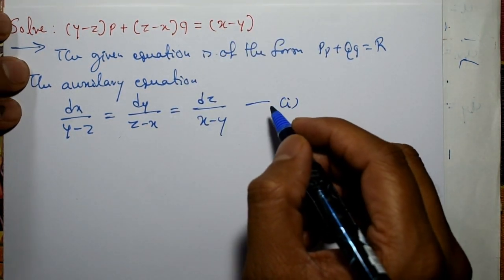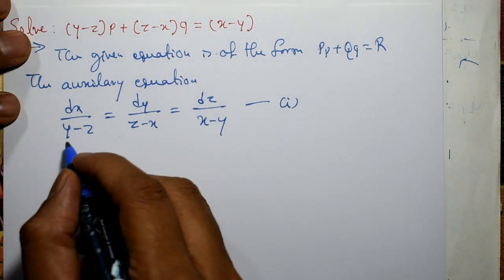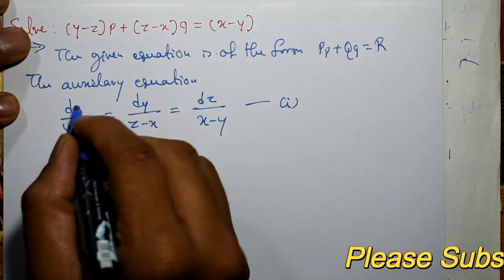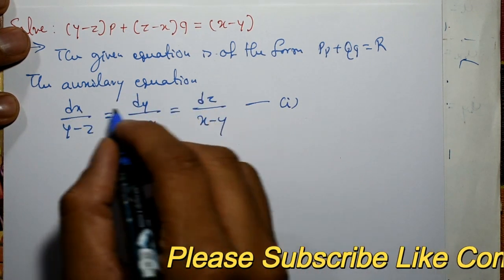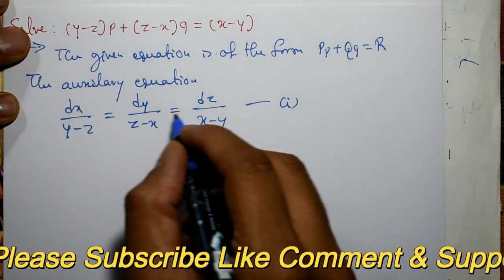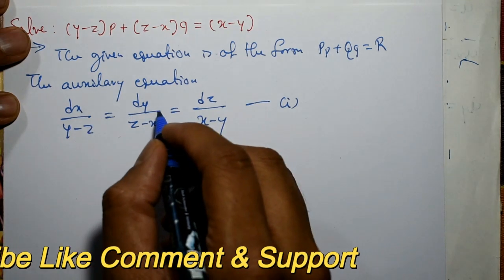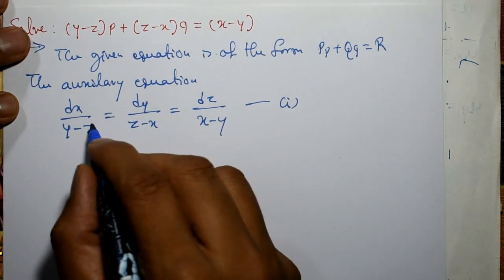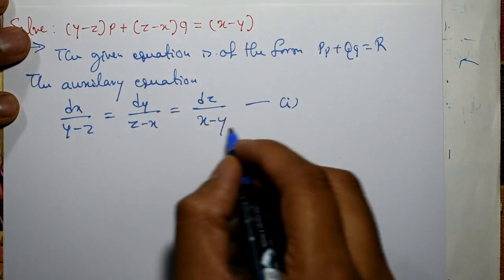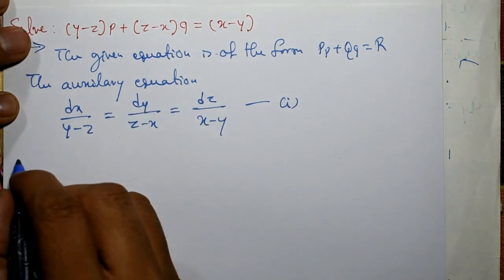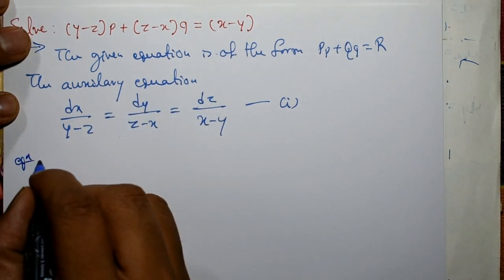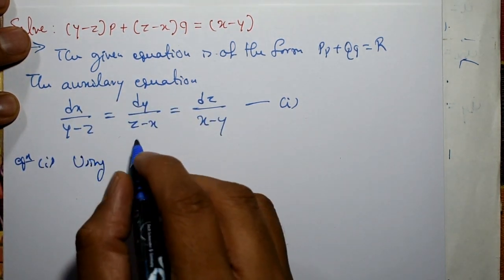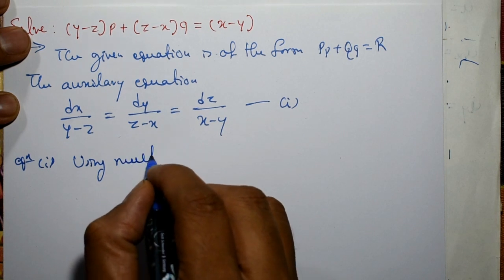Now consider equation number 1. First check any two suitable terms, separate the variable, then integrate. It is not possible to separate the variable in this equation directly. So we will use multipliers.